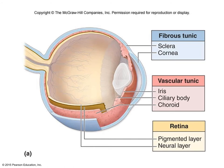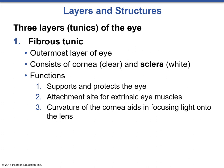We'll start with the fibrous tunic, which is the outermost superficial layer and probably the simplest layer of the eye. Its functions are to support and protect the eye, serve as an attachment site for extrinsic eye muscles, and the curvature of the cornea aids in focusing light into the lens. The fibrous tunic consists of the cornea — the clear portion over the front of the eye — and the rest of the eye, which is the sclera or the white of the eye.